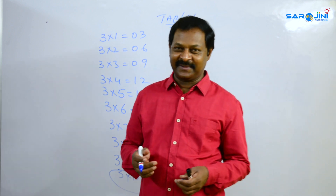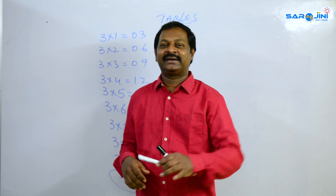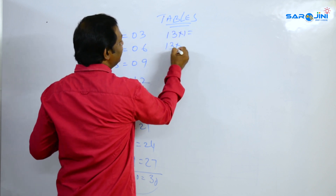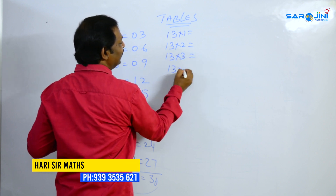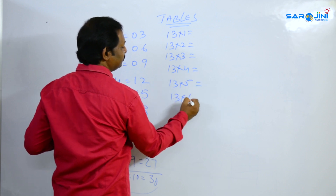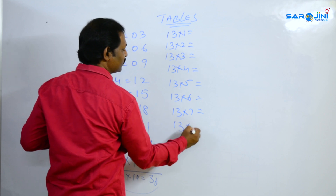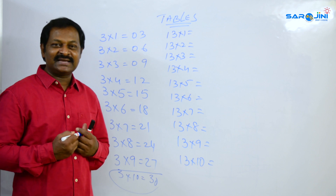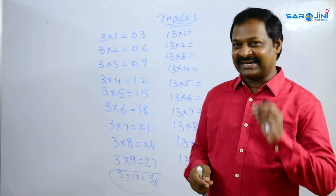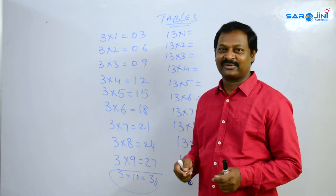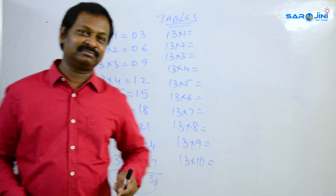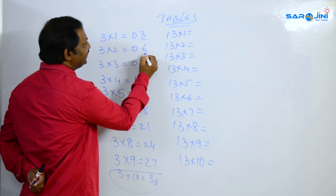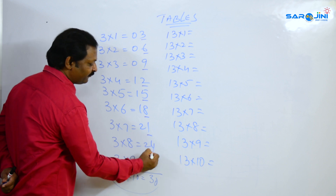So, these are our three tables. I will start with the problem. Let's start with the 3 times table. The units digits follow the pattern: 3, 6, 9, 2, 5, 8, 1, 4, 7, 0.